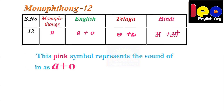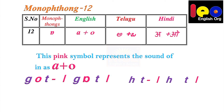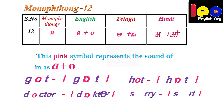Monophthong 12. This reverse A symbol stands for the sound of O in 'got,' O in 'heart,' O in 'doctor,' and O in 'sorry.' It means this particular symbol stands for the combination of A and O — not O alone, not A alone, but O. Got, heart, doctor, sorry.